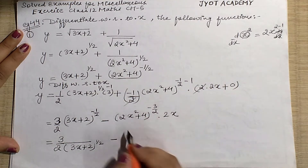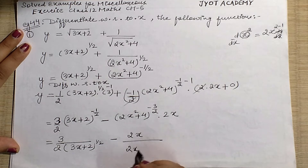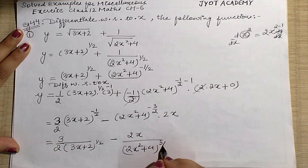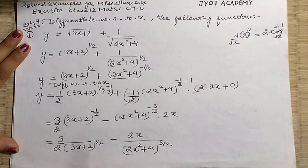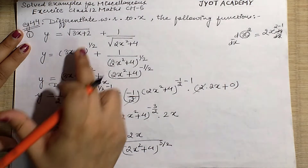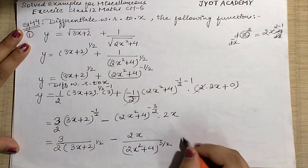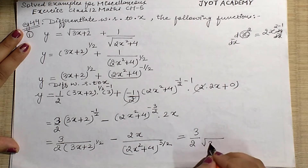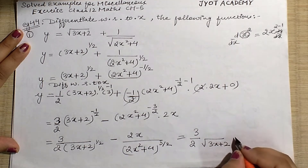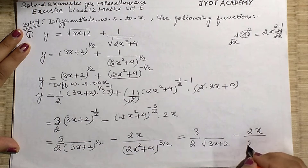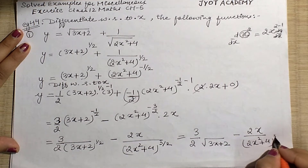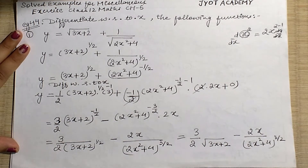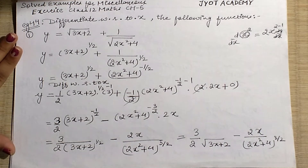Similarly, the other term is also negative, so we send it to the denominator and its power becomes positive 3/2. Now I write power 1/2 back in root form since I know that power 1/2 means square root. So the final answer — which is also given in your NCERT book — is: numerator 3, denominator (2x²+4)^(3/2). This is the final answer for Example 44, Part 1.